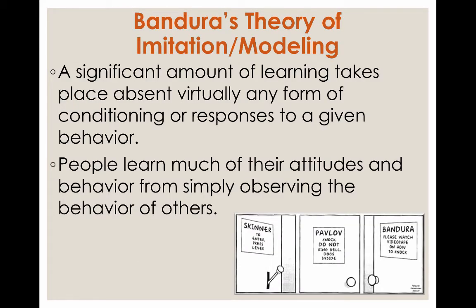Bandura's theory of imitation and modeling demonstrated through theoretical and experimental studies that a significant amount of learning takes place absent virtually any form of conditioning. He argued that people learn much of their attitudes and behaviors from simply observing the behaviors of others. He performed experiments where randomized groups of children watched a video of adults acting aggressively towards a Bobo doll — a big plastic toy with a weight at the base. A control group of kids didn't watch the video. The ones who had watched it acted far more aggressively towards the doll, meaning we do learn and model behavior just from watching others.